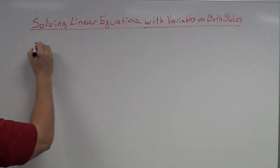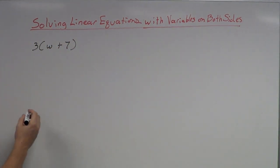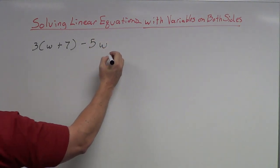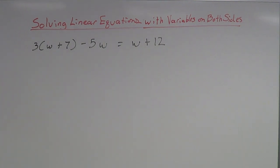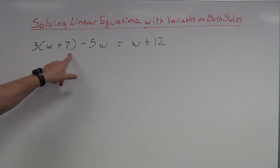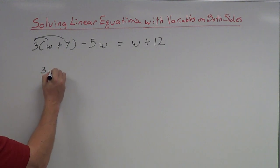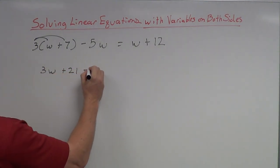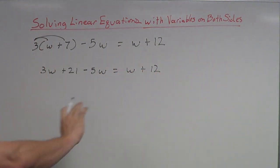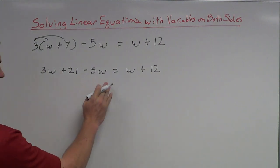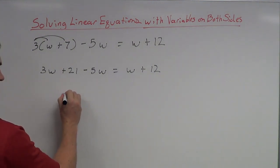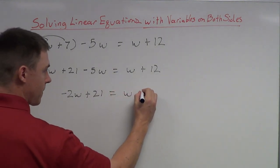Next example: 3 times the quantity W plus 7, minus 5W, equals W plus 12. On the left side, we do have a little distributive property to handle first. Taking 3 times everything in the parentheses: 3 times W is 3W, 3 times 7 is positive 21, minus 5W, equals W plus 12. Nothing on the right side needs to change — W and 12 can't combine. On the left side, 3W and negative 5W are like terms, so combining them gives negative 2W plus 21 equals W plus 12.